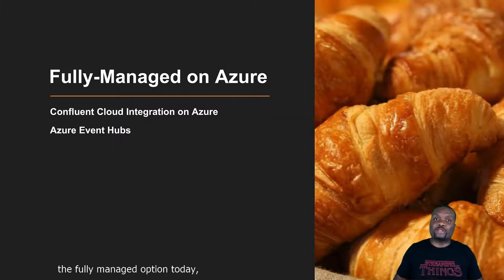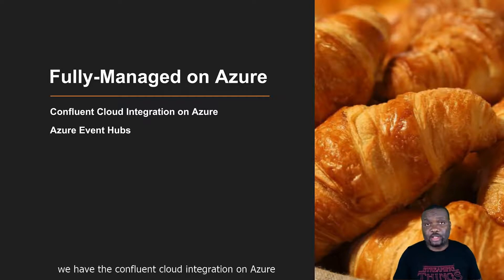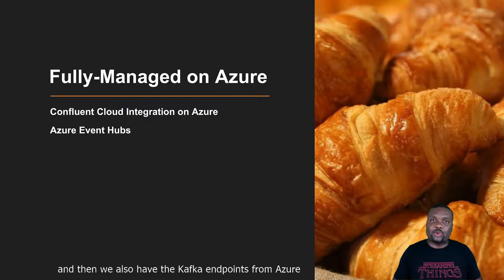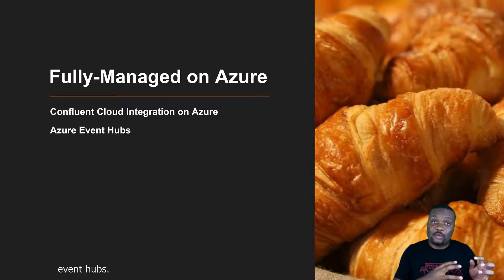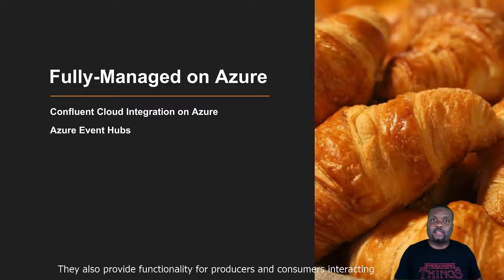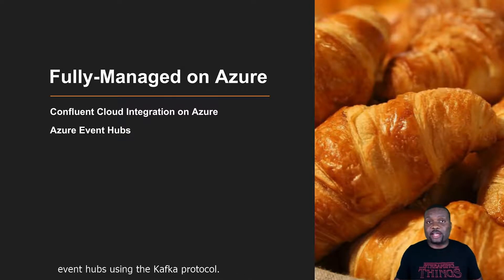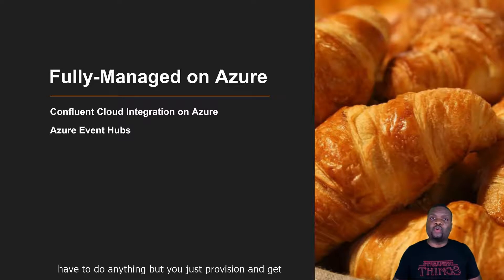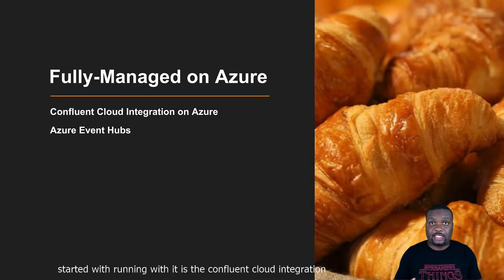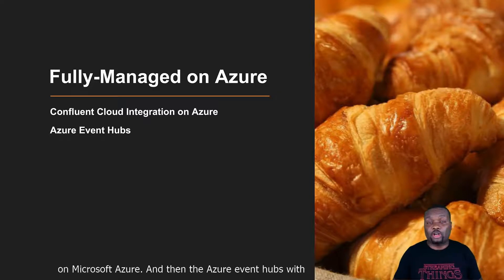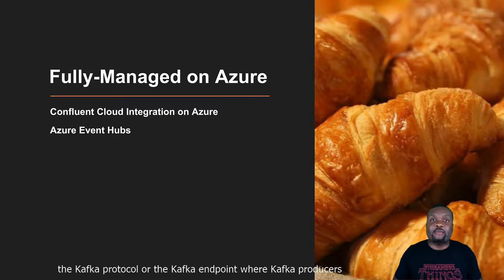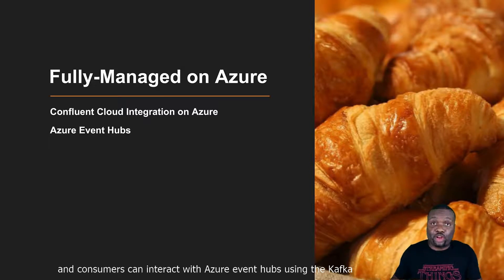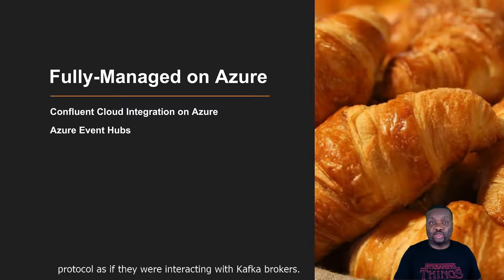In terms of the fully managed option today, we have the Confluent Cloud integration on Microsoft Azure, and then we also have the Kafka endpoint from Azure Event Hubs that provides functionality for producers and consumers interacting with Event Hubs using the Kafka protocol. These are the two fully managed options where you just provision and get started — Confluent Cloud on Microsoft Azure, and Azure Event Hubs with the Kafka endpoint where Kafka producers and consumers can interact with Azure Event Hubs as if they were interacting with Kafka brokers.